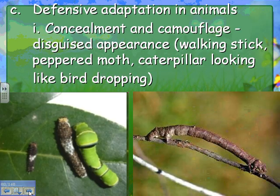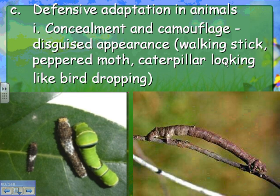Here are defensive adaptations in animals. One of the coolest: this looks like a piece of bird droppings but is actually a type of caterpillar, and this looks like a stick but is another caterpillar. Concealment and camouflage include disguised appearance, like the walking stick, the peppered moth that blends in with the trees it lives on, and the caterpillar that looks like bird poop.